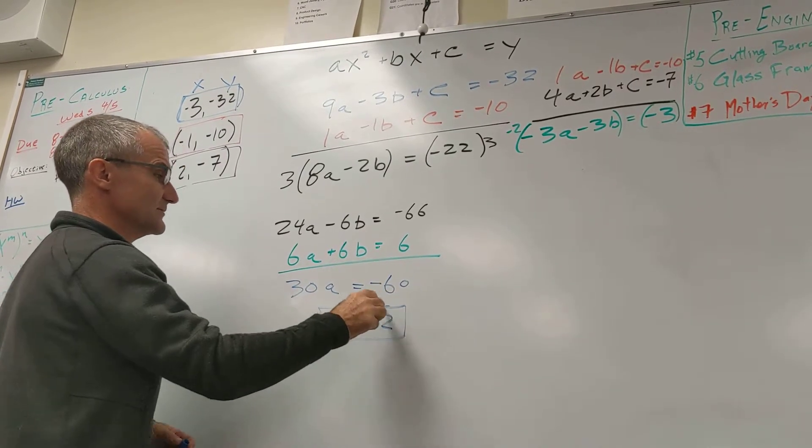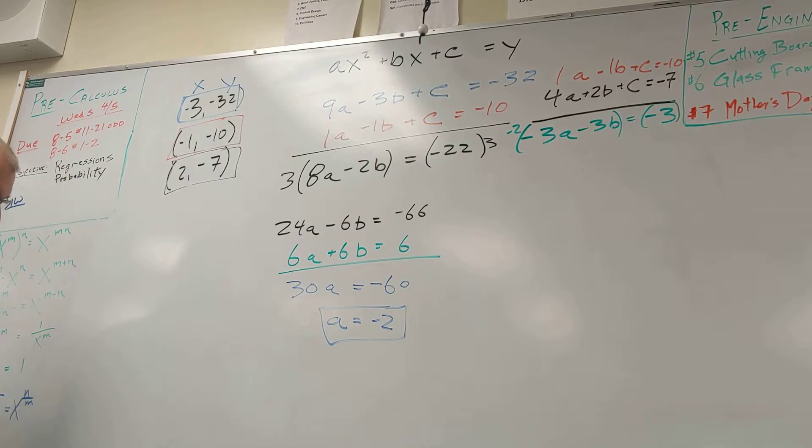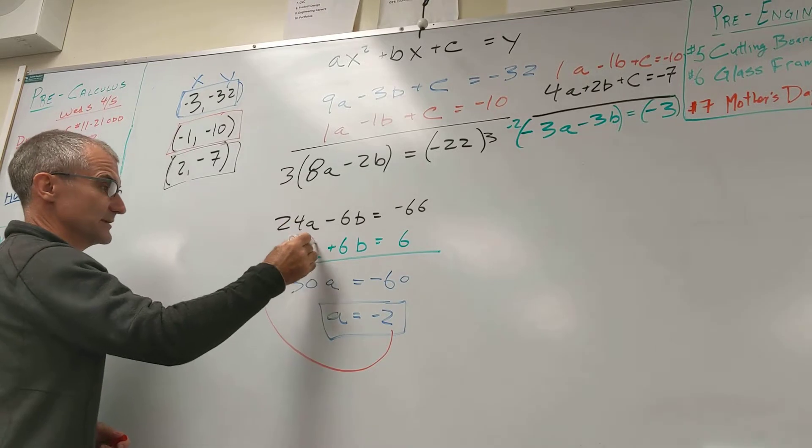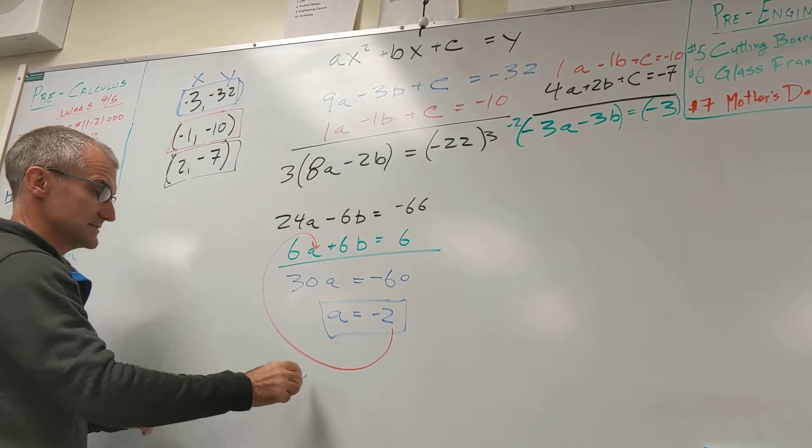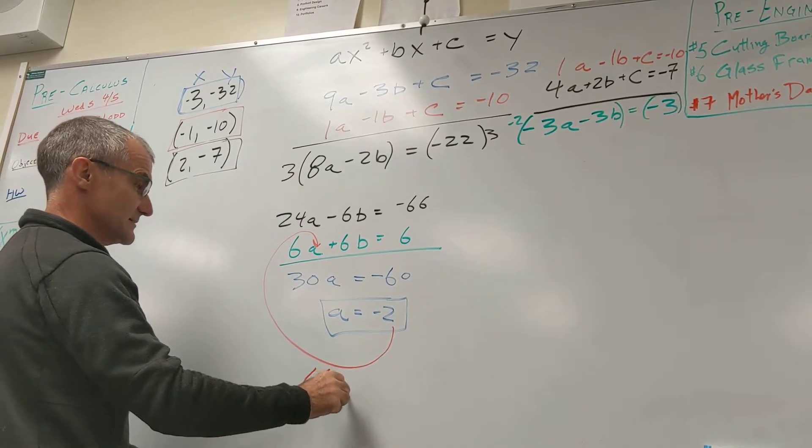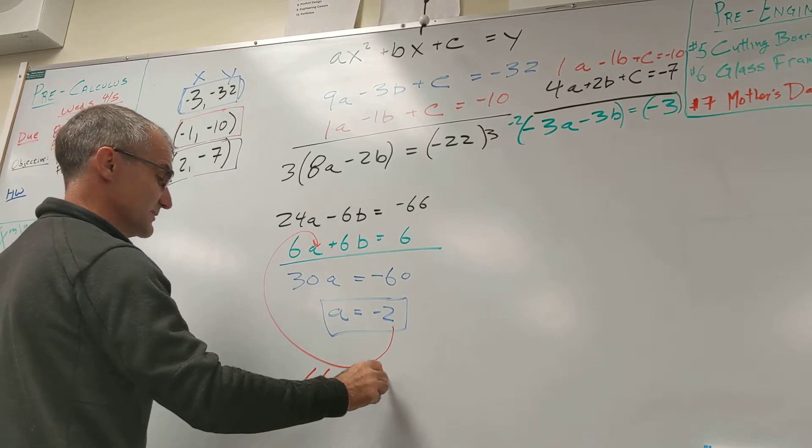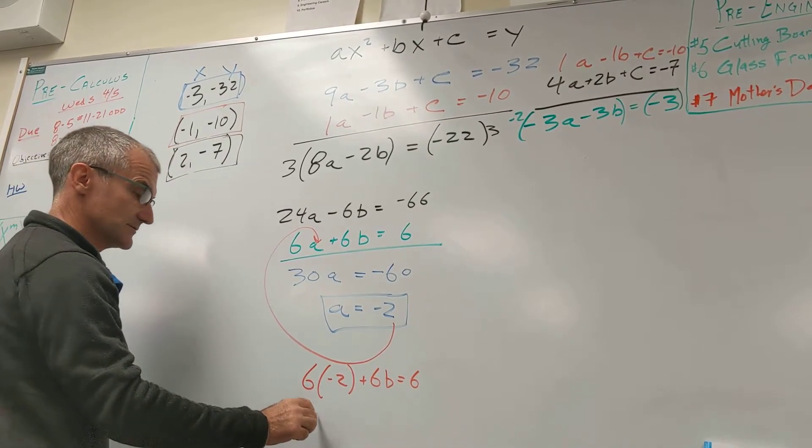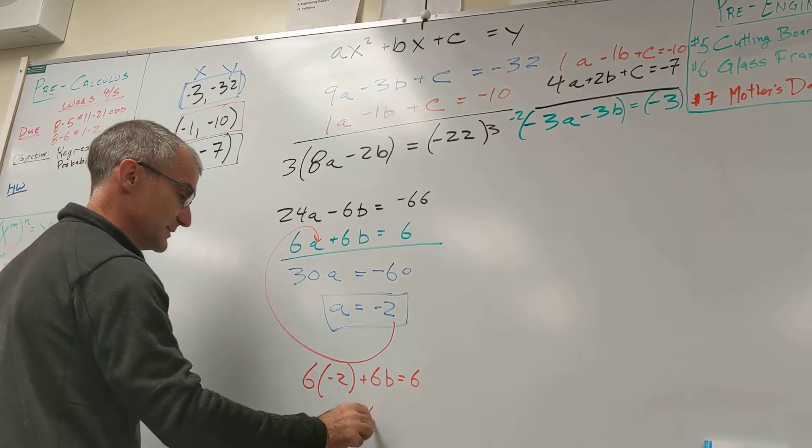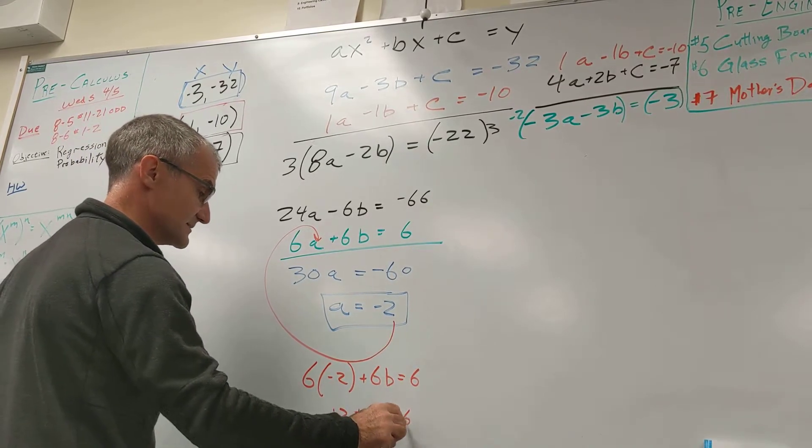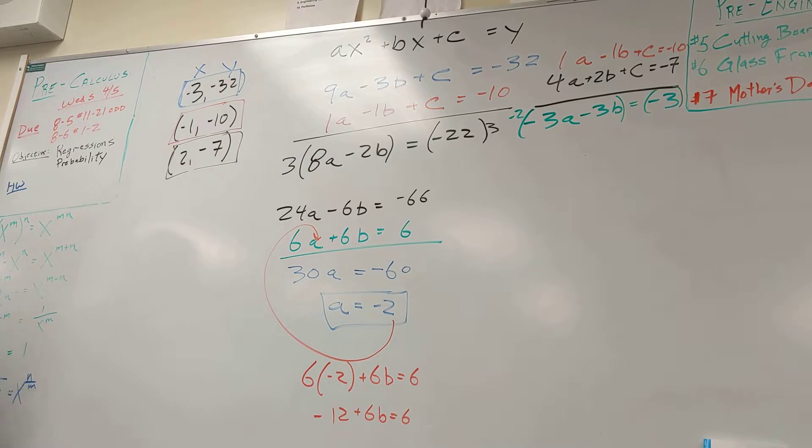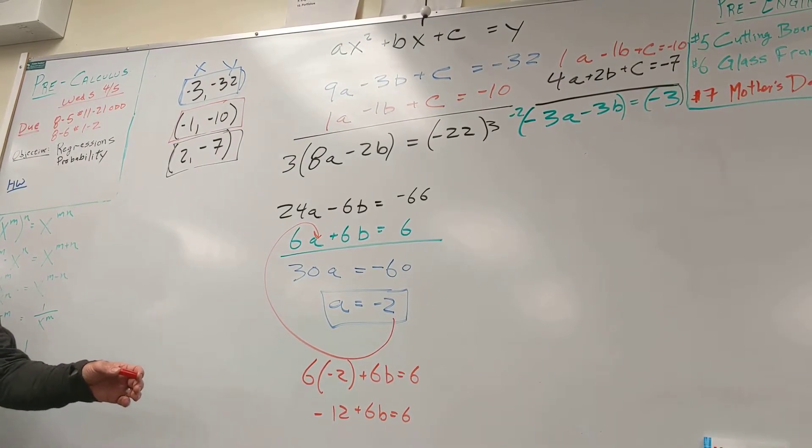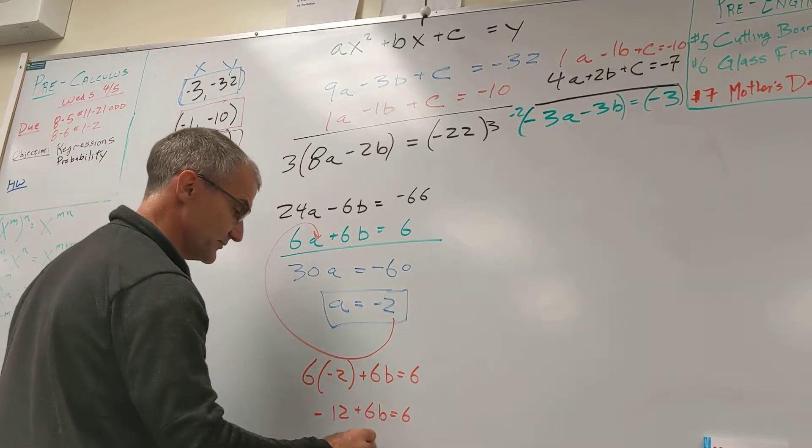Now that I have a value for a, I can take that value for a, plug it into either equation. I guess I'll plug it right in there. To get negative 6 times a plus 6b equals 6. It's negative 12 plus 6b equals 6. I'll add 12 to both sides. 6b equals 18. So b is equal to 3.